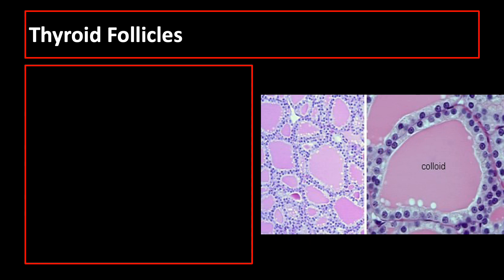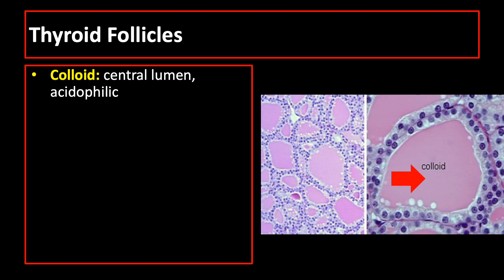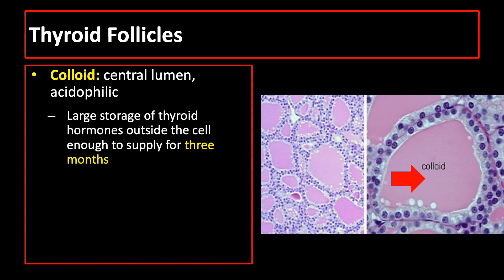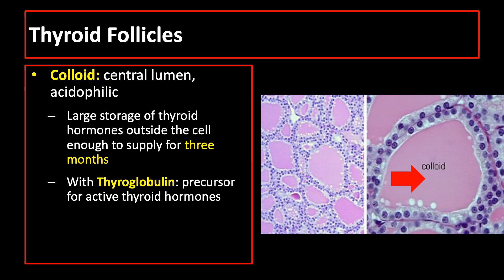The central lumen is densely filled with gelatinous acidophilic colloid. The thyroid is the only endocrine gland in which a large quantity of secretory product is stored, enough to supply for 3 months. The thyroid colloid consists of large glycoprotein thyroglobulin, which is the precursor for the active thyroid hormones.